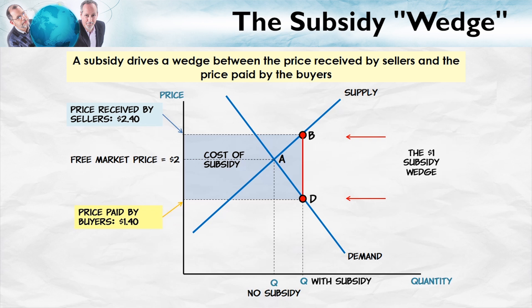Another effect of the subsidy is that it increases the quantity exchanged — from the quantity with no subsidy to the quantity with the subsidy. On those additional units exchanged, the supply and demand curves tell us that the cost to suppliers of supplying those units exceeds the value to demanders of those units. So the subsidy creates a deadweight loss — there's too much trade going on. As opposed to a tax, which reduces beneficial trades, the subsidy increases wasteful trades.